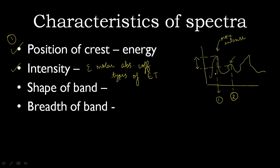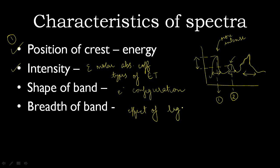As you can see, this is a band. The various shapes — this is a random curve I've drawn, but you can see there's a shoulder, then another shoulder, and there's a peak. The shape of the band gives information about the electronic configuration. The next characteristic is the breadth of the band — the width. This shows the effect of the ligand on the metal.